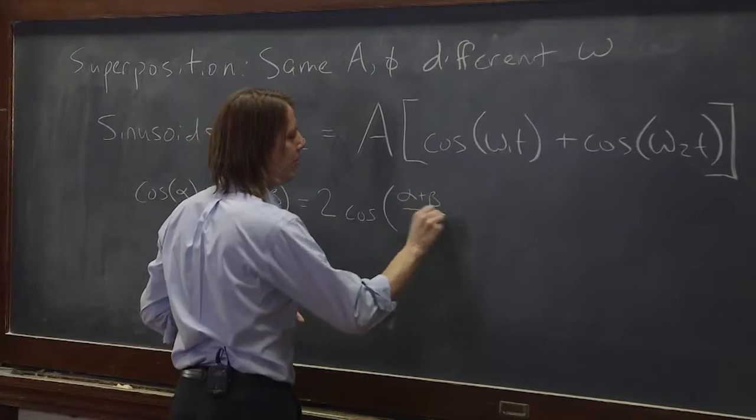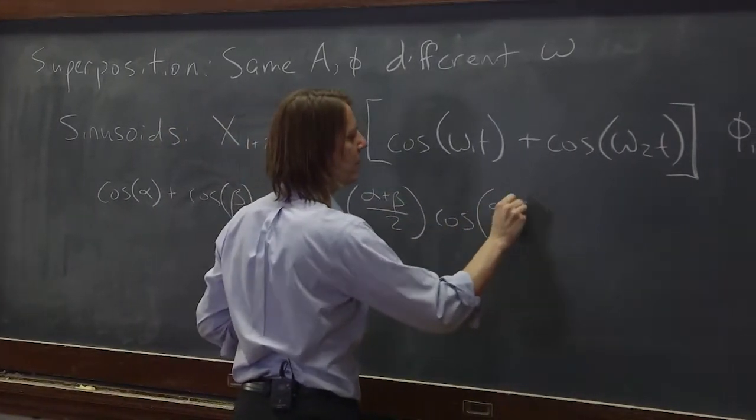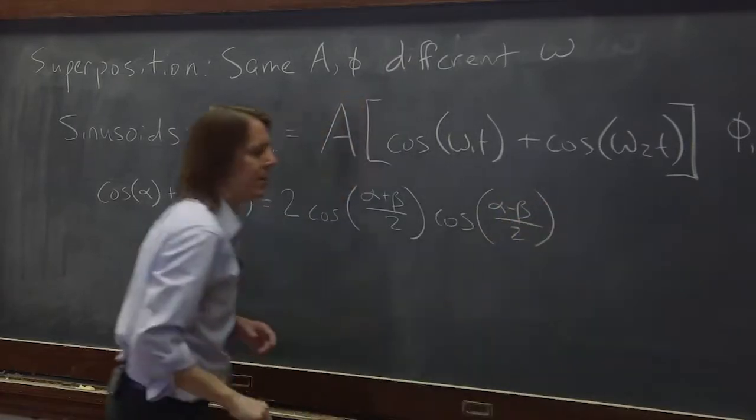Alpha plus beta over 2, times the cosine of the difference, alpha minus beta over 2.